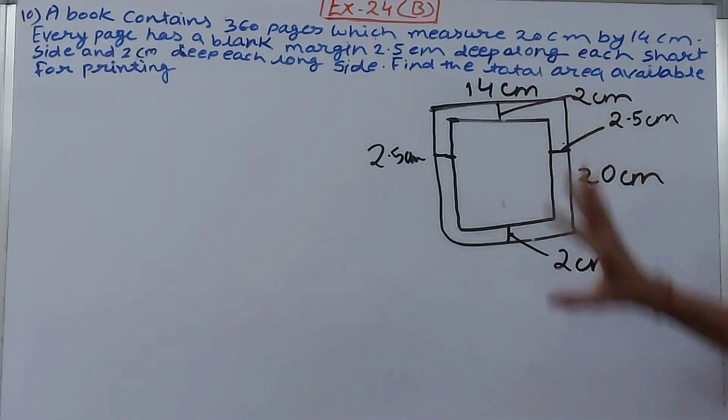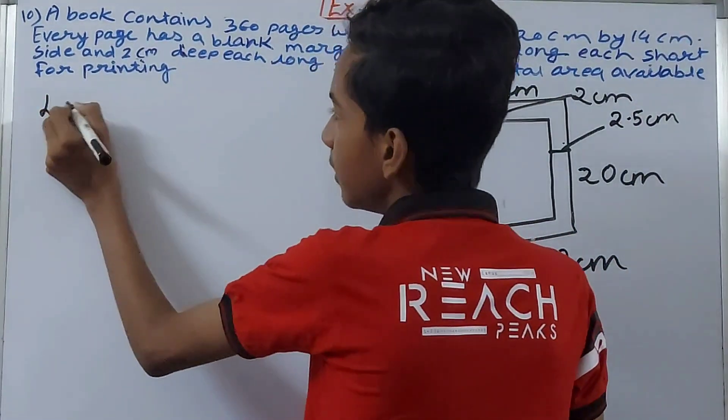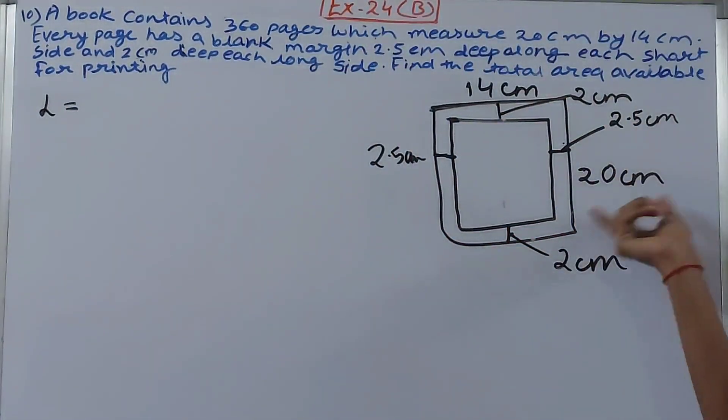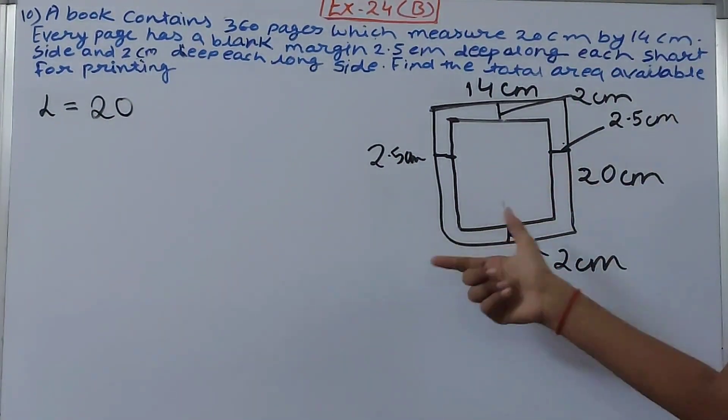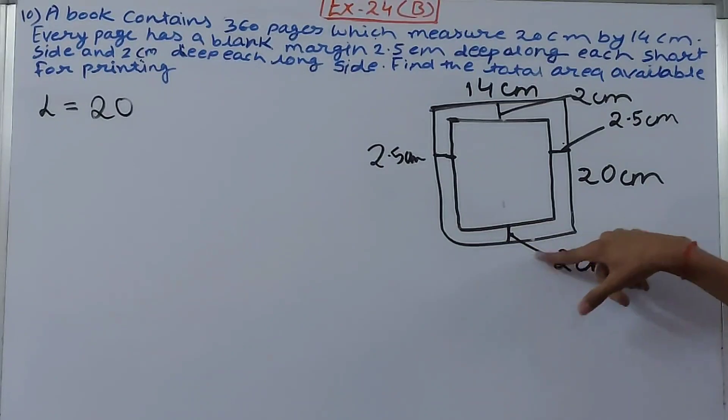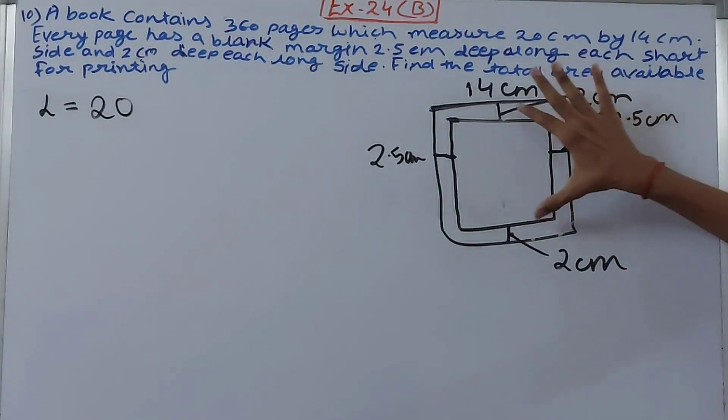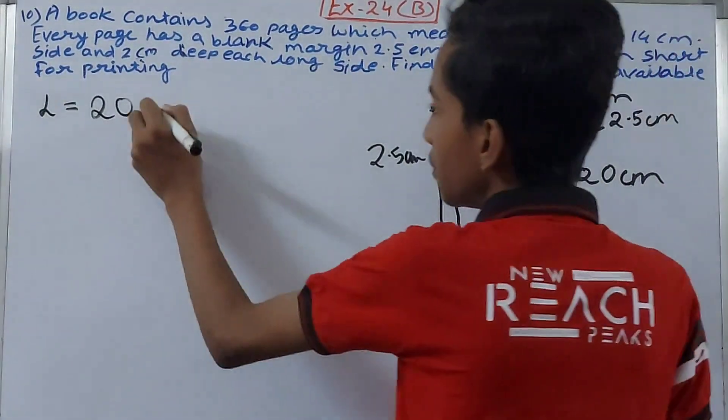So see here now, calculate the new breadth. Right, the length we know is 20 centimeters. And the breadth, length is 20 but we have to subtract 2+2 centimeters from the length. This is 20, and 2+2 centimeters will be left out, so 20 minus 4 = 16 centimeters. Fine.